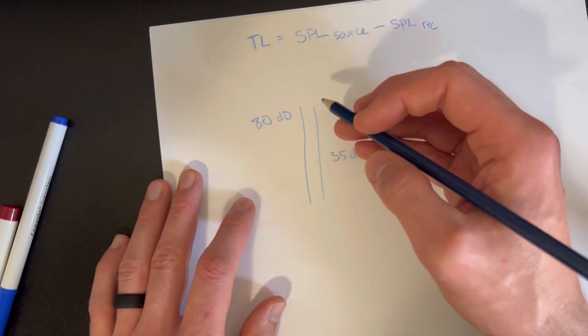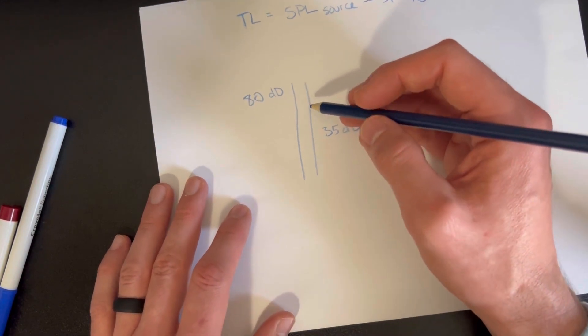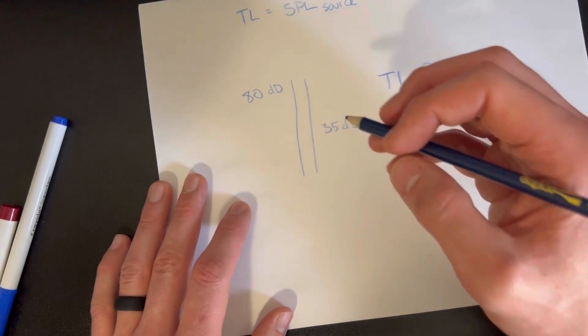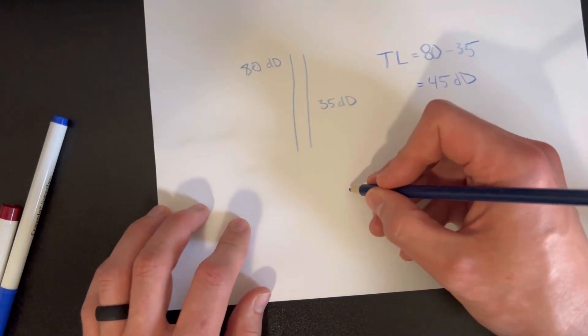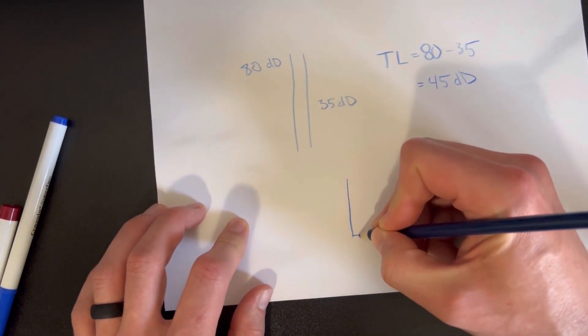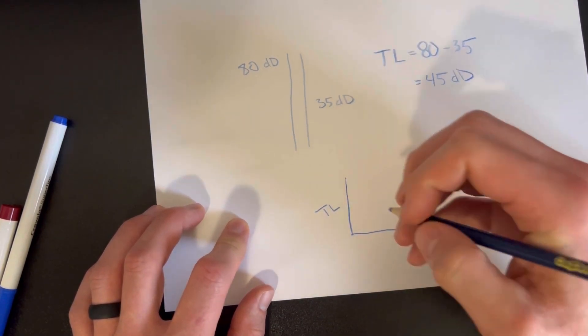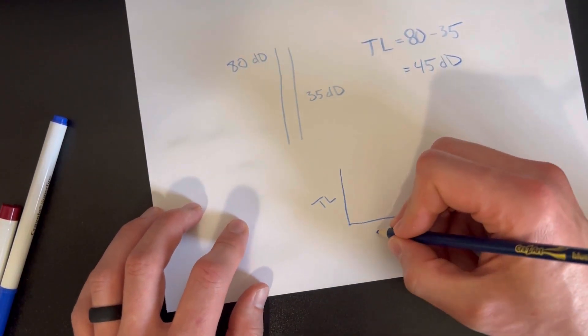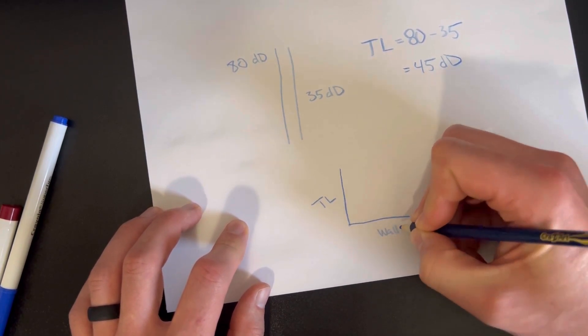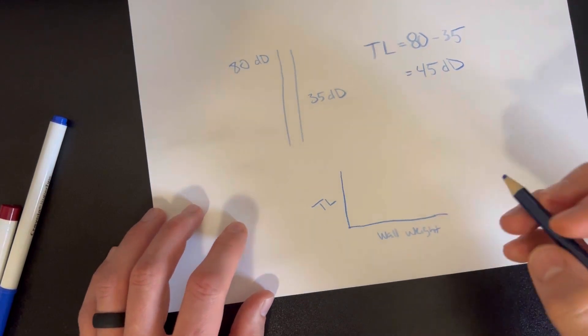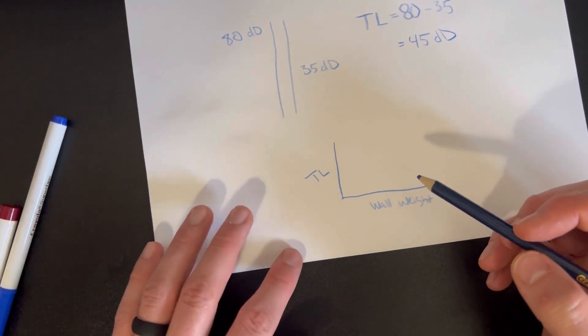Now one thing to know about the relationship of the mass of this wall. Say we have a graph right here - we've got transmission loss on this side and wall weight over here.